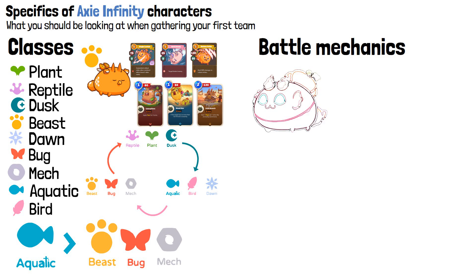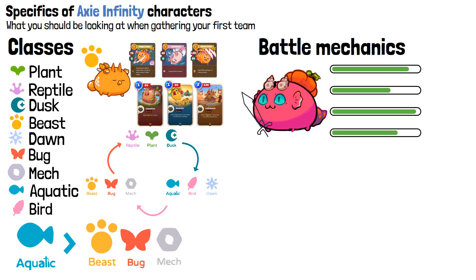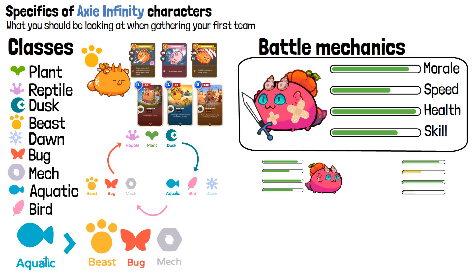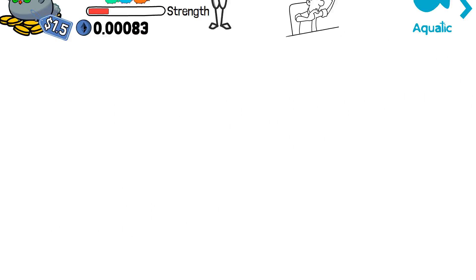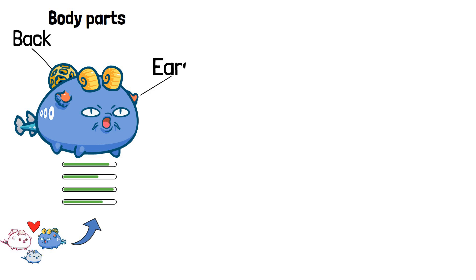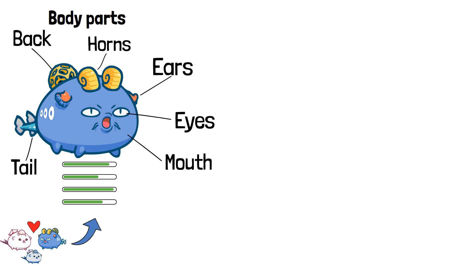When it comes to battle mechanics, Axies have 4 stats that determine the degree of damage the digital pet will do to its competitor and how much damage it can handle. These stats include morale, speed, health, and skill. The statistics also influence which Axie will make the first move in battle. Apart from stats and classes, each Axie has 6 body parts that can change during breeding and impact its battling capabilities: the back, ears, eyes, horns, mouth, and tail. The only body parts that don't impact battling abilities are the eyes and ears.